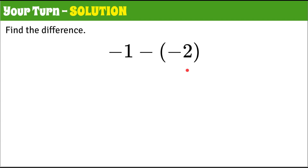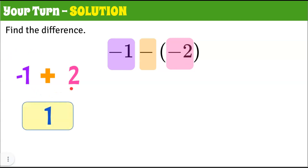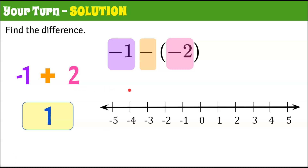Welcome back. We're going to review the solution — we're going to find the difference of negative one subtract negative two. Using keep, change, opposite: we keep negative one, change subtraction to addition, and find the opposite of negative two, which is positive two. Negative one add two is positive one. On the number line: start at zero, go to negative one. Prepare to change direction because of subtract, then change direction again because of negative, and go two spaces to the right — ending on positive one.